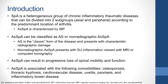The term SPA is used to describe a heterogeneous group of chronic inflammatory rheumatic diseases that can be divided into two subgroups—axial and peripheral—according to the predominant location of arthritis. Axial SPA is characterized by inflammatory back pain, and patients have involvement of the sacroiliac joints, the spine, or in some cases both.